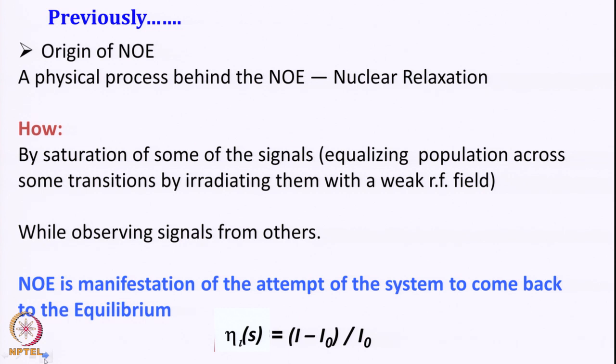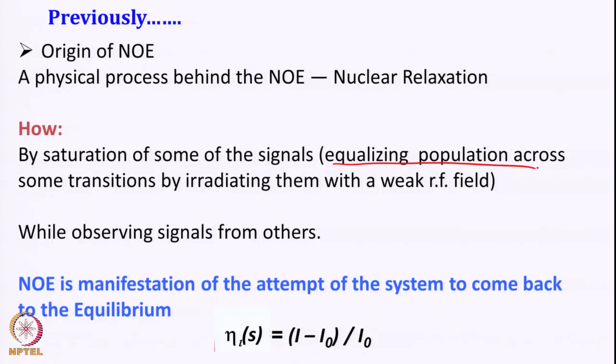So how is it done? We have two coupled spins, coupled by dipolar coupling or through space. We apply a saturation pulse on one of the signals. This saturation pulse equalizes the population across that transition, and by irradiation we equalize this population. We then look at what is happening on the other spin — we equalize population on one spin and observe the effect on the other coupled spin.